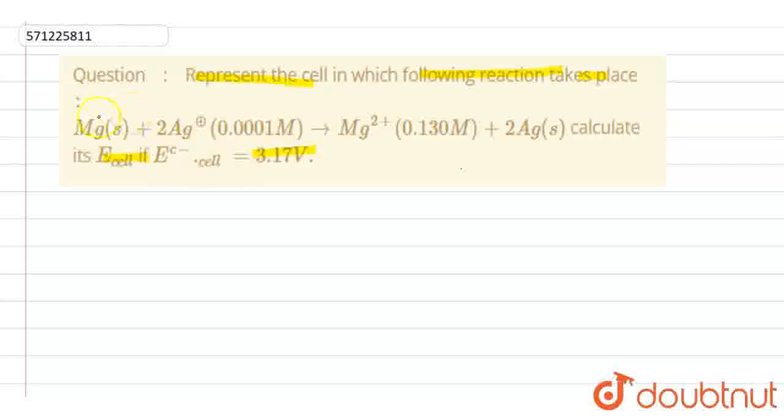So here is this reaction. This magnesium is losing two electrons. That means its oxidation takes place. And this Ag, silver, is gaining electron. That means its reduction takes place.